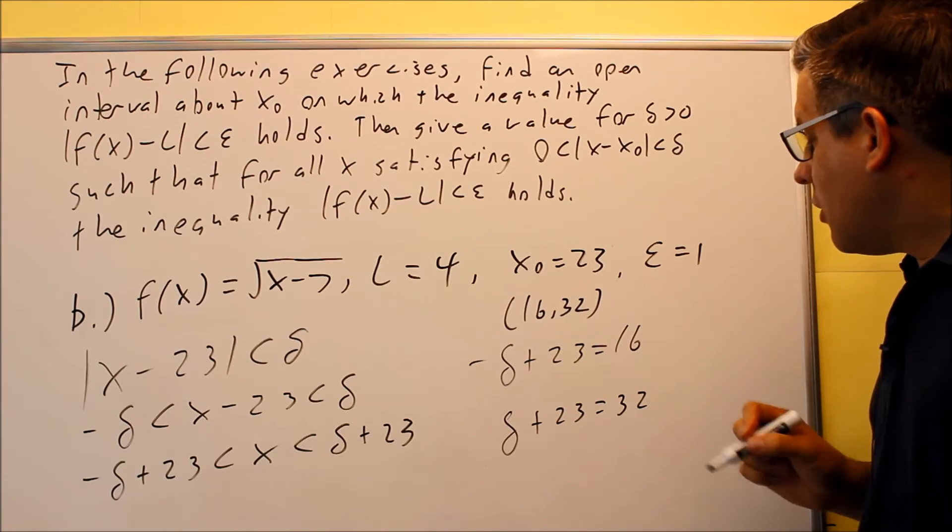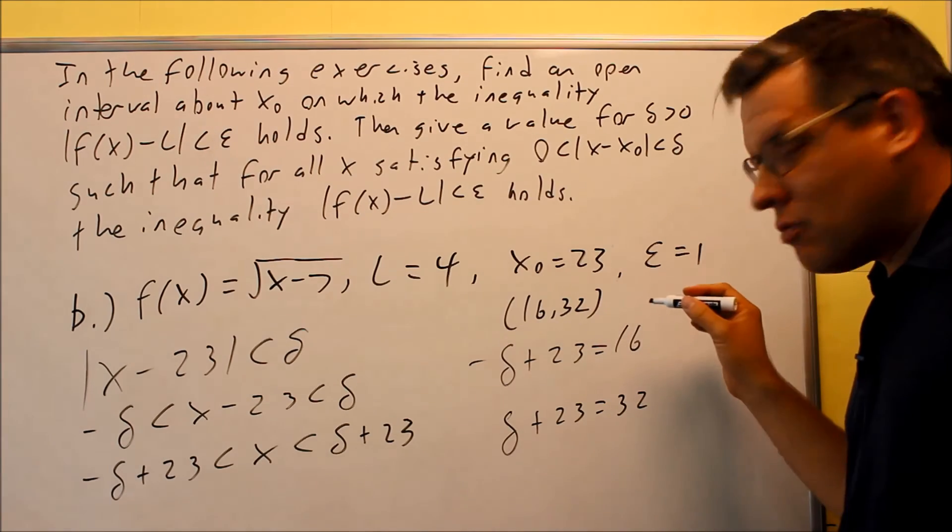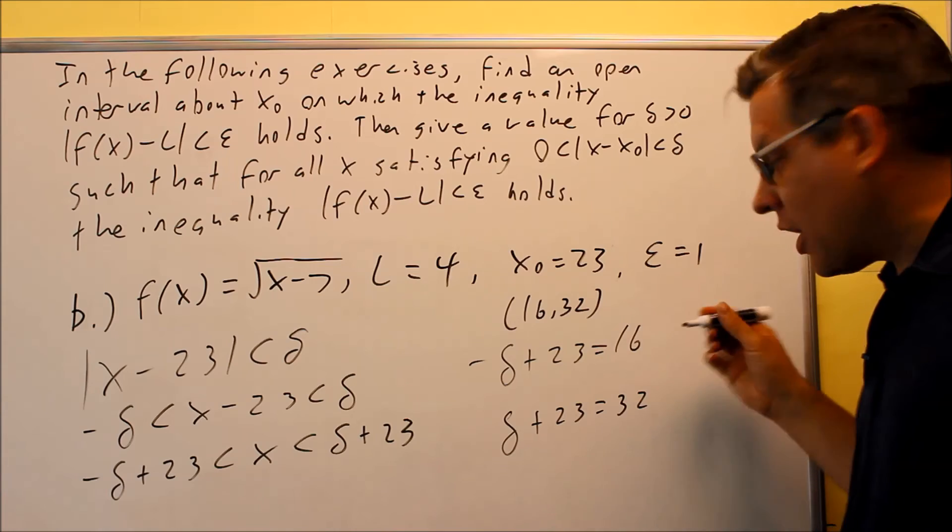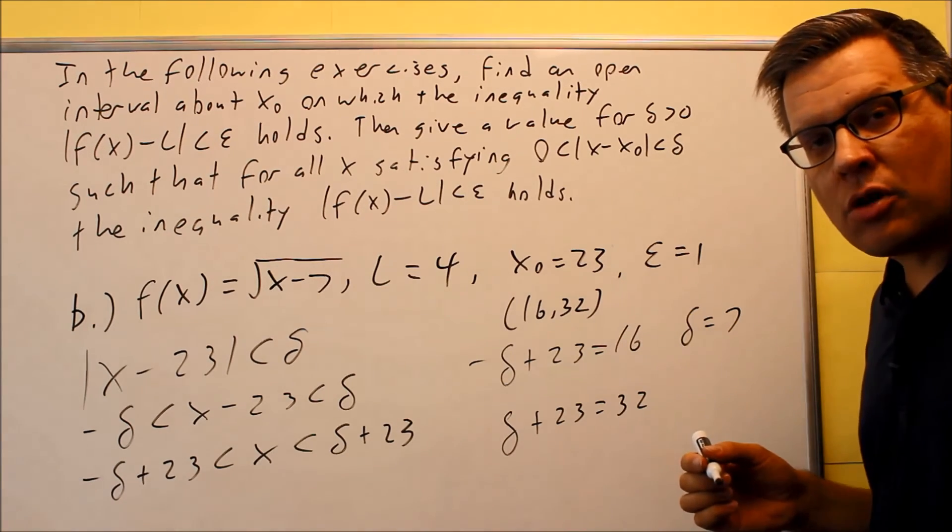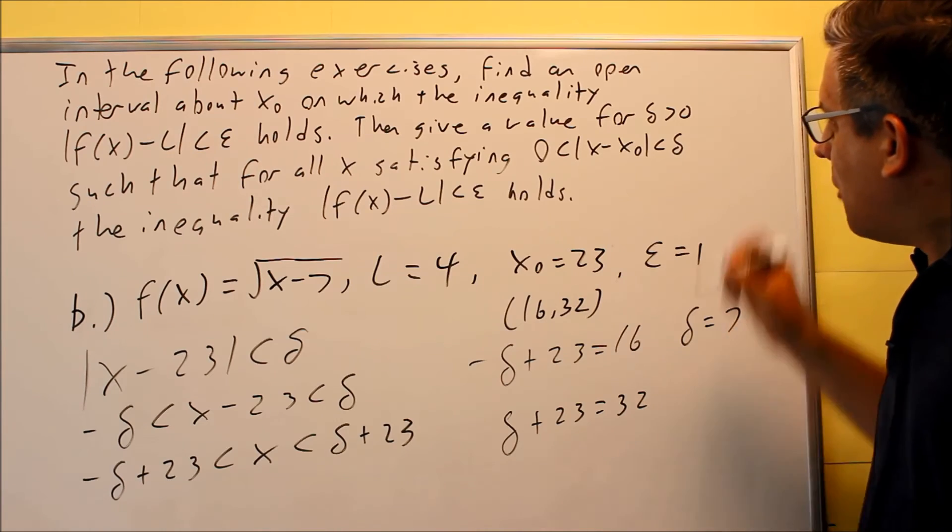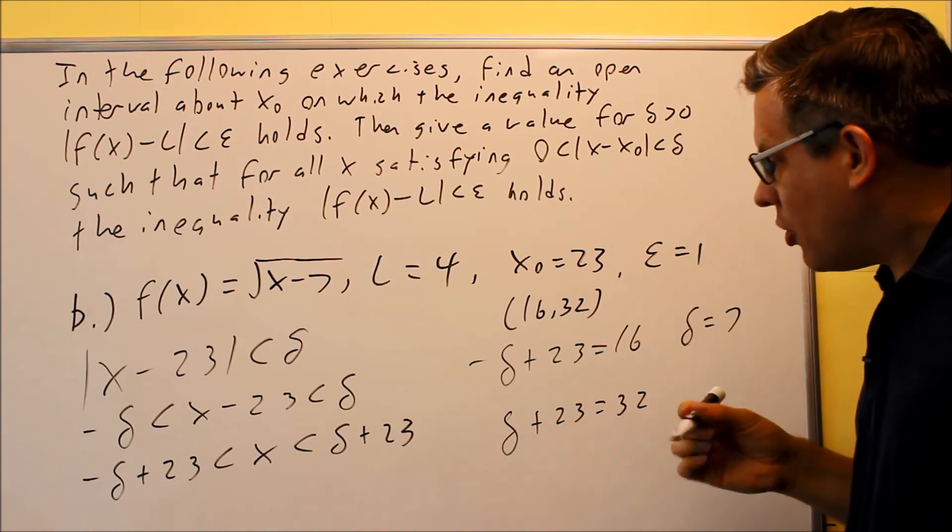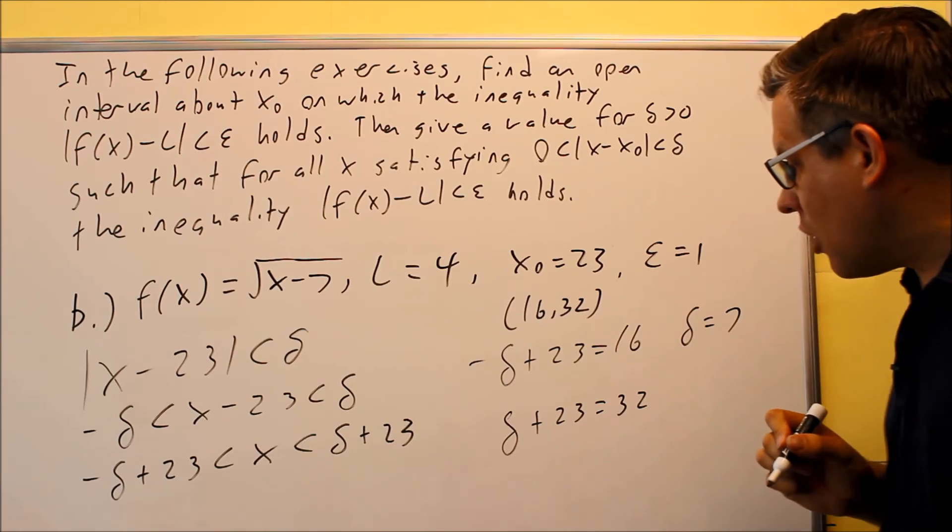This one I'm going to do 23 minus 16 is negative 7, and then with a negative there, I'll get delta to be positive 7. You should always get a positive number for your delta because that's what it says basically here. So if you don't get a positive number, you've got to go back and check because you might have did something wrong there.